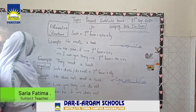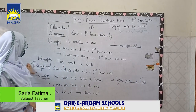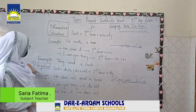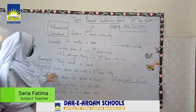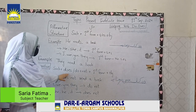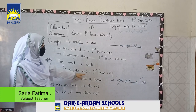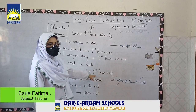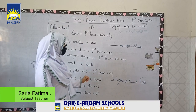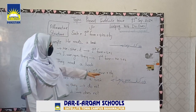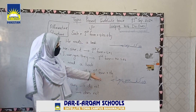Now we have the negative tense structure: subject plus do or does, plus not, plus first form of verb, plus object. For example in Urdu: 'hum kitab nahi parhte' — in English: we do not read the book.